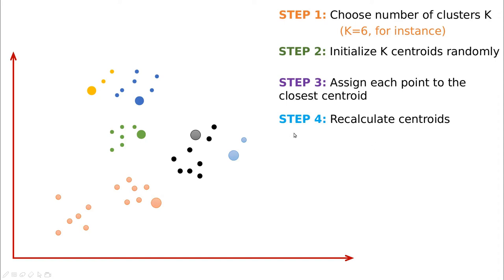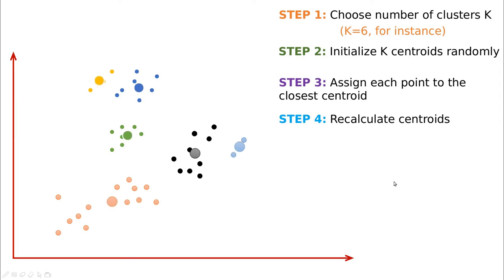Step number four: we can now recalculate the centroids using all the data points in each group. In this case we have just two points, the big one and the small one, so the new centroid is going to be around there. The black centroid is going to move because now the center of mass of the black points is in the middle. The same applies to the blue and so on.